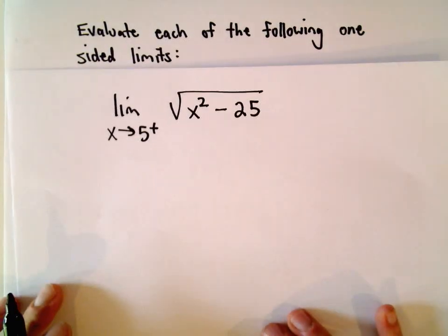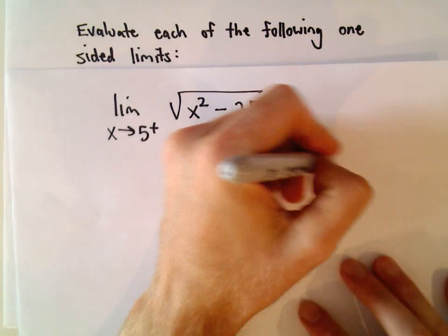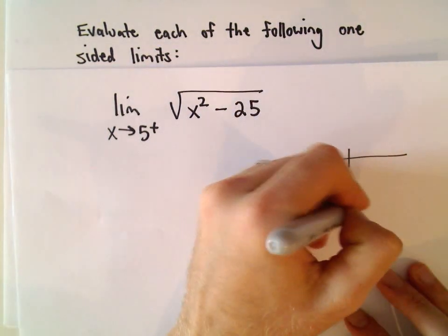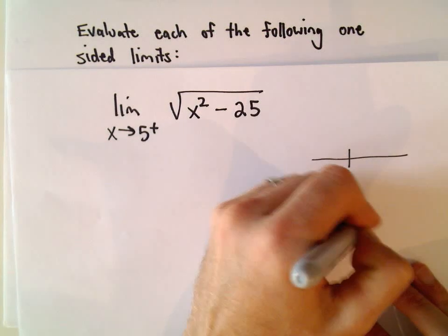Well again intuitively I'm going to take numbers a little bit bigger than 5. So maybe you know 5.1, 5.01, 5.001.